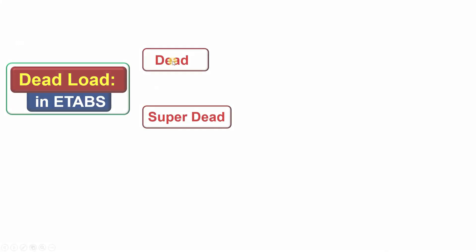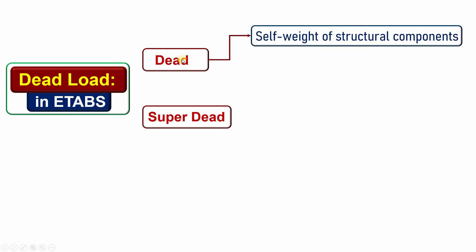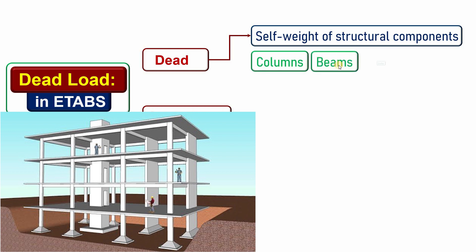Now let me discuss these two things in detail. So here, what is the dead? The dead type is used when the dead load is associated with the self-weight of the structural components. Here I mean structural components means those components that are used to support loads and to transfer loads, such as columns, beams, slabs, staircase, and also structural walls. So these are the structural components.